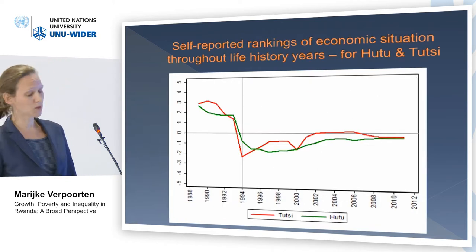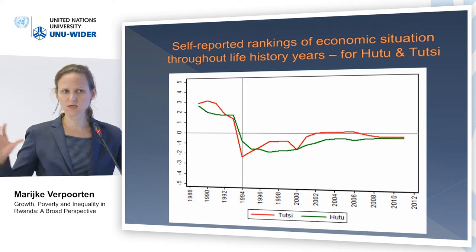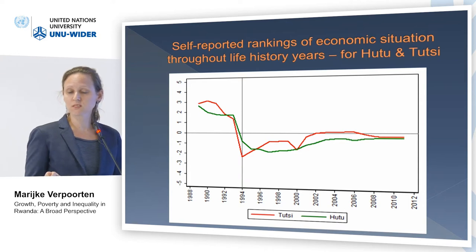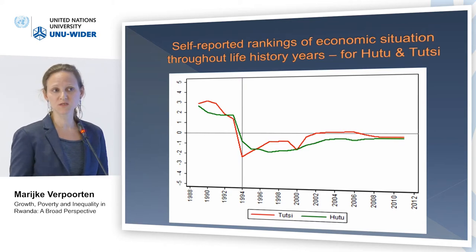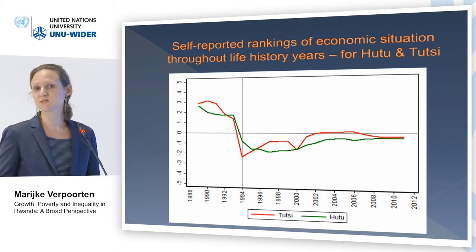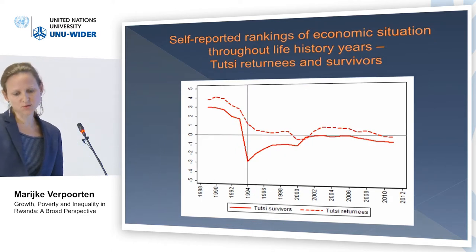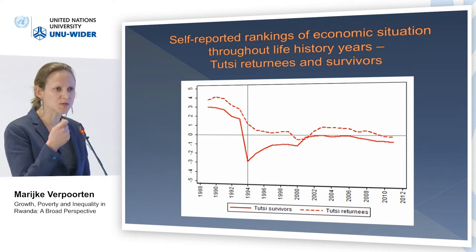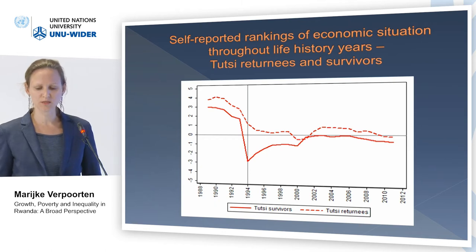However, and maybe somewhat surprising depending on what side you are in the Rwandan debate, when we look at the self-reported rankings of economic situation of Hutu and Tutsi, we don't see a lot of difference. So we don't see evidence for perceived increases in horizontal inequality. We do see that Tutsi returnees rank their economic situation a bit better than Tutsi survivors, but the difference is certainly not large.